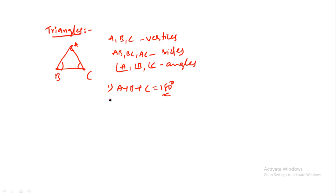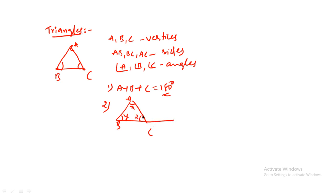For example, in triangle ABC, if the exterior angle is BX, interior angle Y, then for any angle — for example, exterior angle plus interior angle B equals 180 degrees.